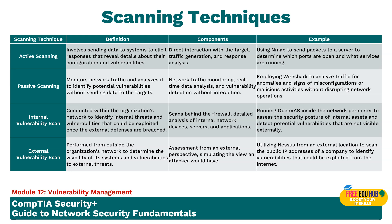Internal vulnerability scans are conducted within the organization network to identify internal threats and vulnerabilities that could be exploited once external defenses are breached. These scans behind the firewall provide detailed analysis of internal network devices, servers, and applications. This type of scan helps organizations understand what an attacker could do once they have gained access to the internal network, and is crucial for identifying vulnerabilities exploitable by insider threats. An example is running OpenVAS inside the network perimeter to assess the security posture of internal assets.